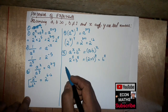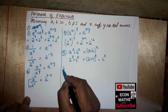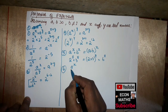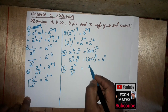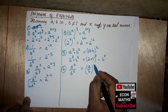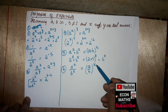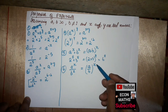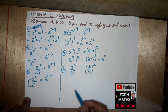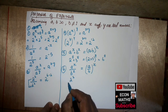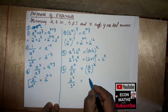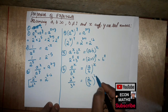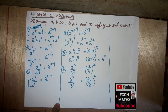The sixth property is: a to the power x over b to the power x equals a over b to the power x. The bases are factored out and share the same exponent. For example, 2 squared over 3 squared becomes 2 over 3, all squared. These were the properties of exponents.